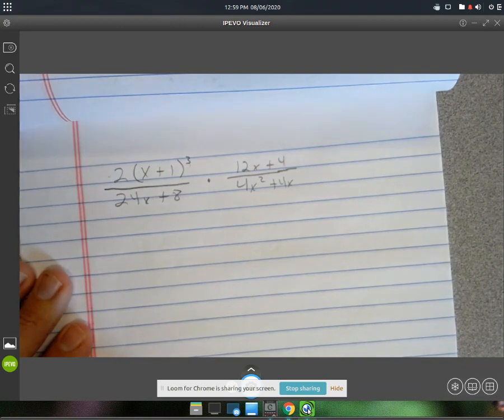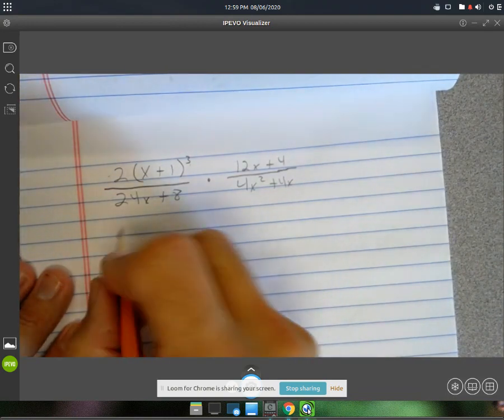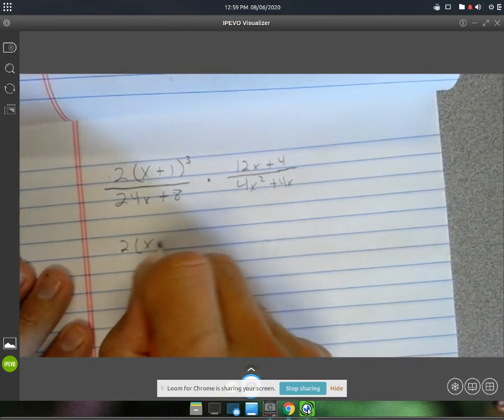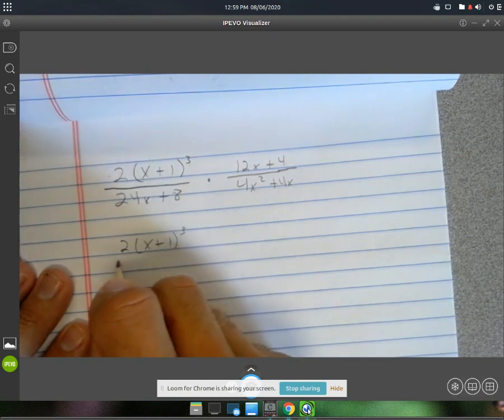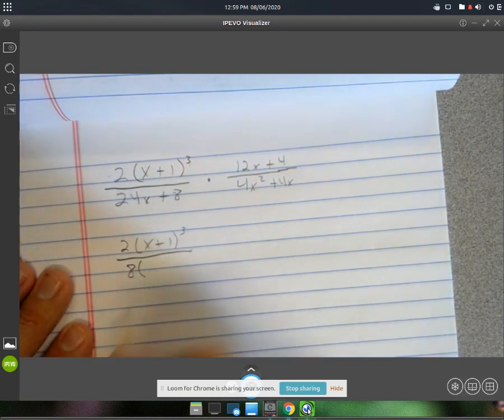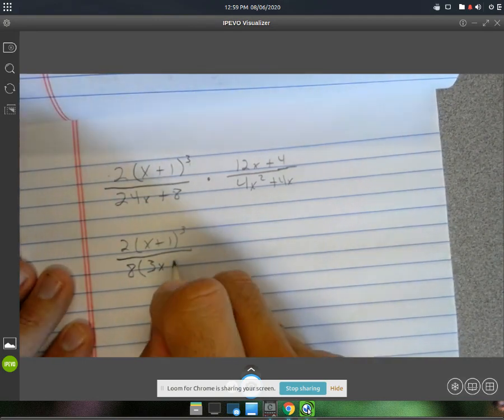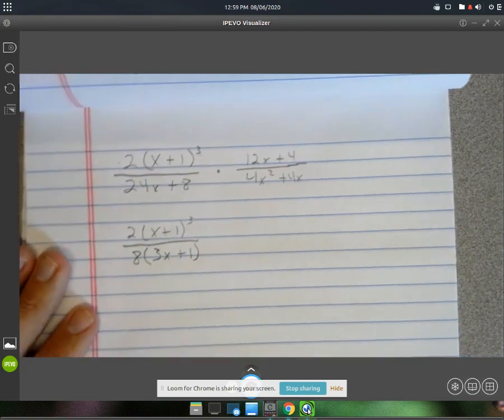Alright, in the bottom we can take an 8 out of both terms. Let's rewrite it here. 2x plus 1, to the third. And we're going to be taking out an 8. So 8 times 3 gives us 24. And then 8 times 1 gives us 8.